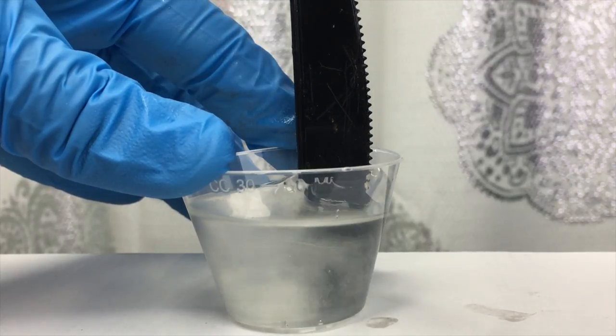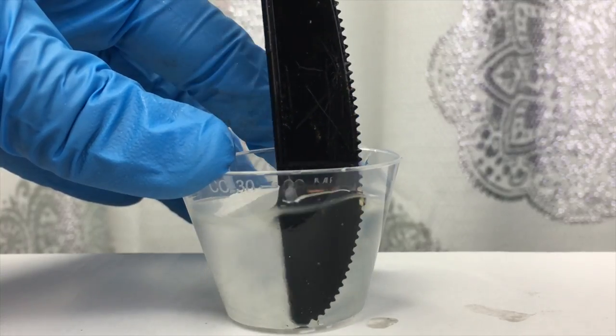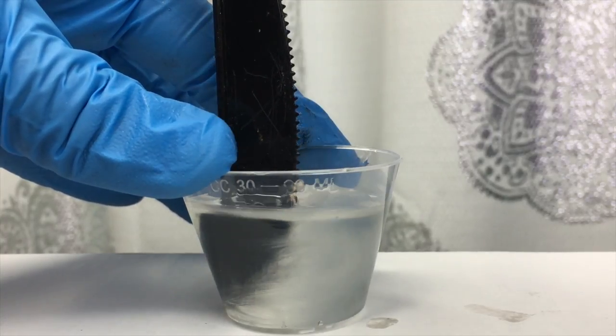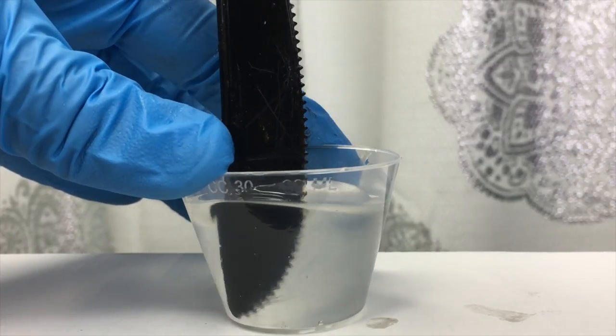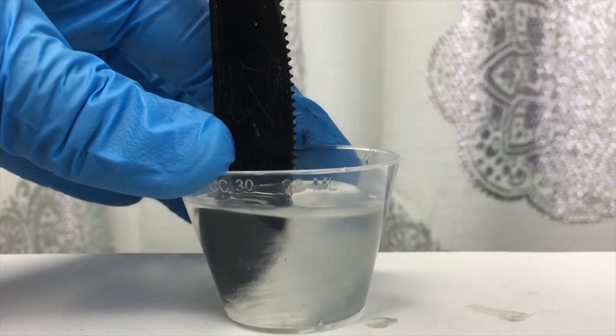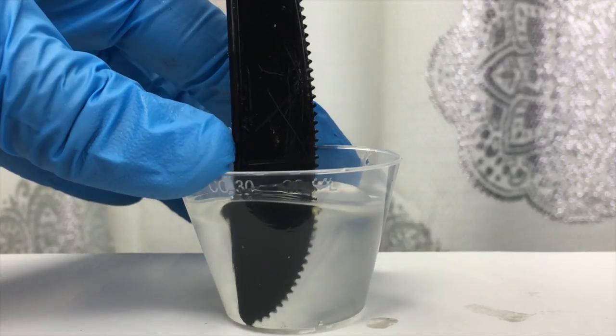Also don't forget to scrape the sides of the cup because sometimes the hardener will linger there and you want to make sure your resin is fully mixed together because if it's not or if you do not have the measurements correctly your resin will not fully cure once the 24 to 48 hours are up and it will be soft and malleable.